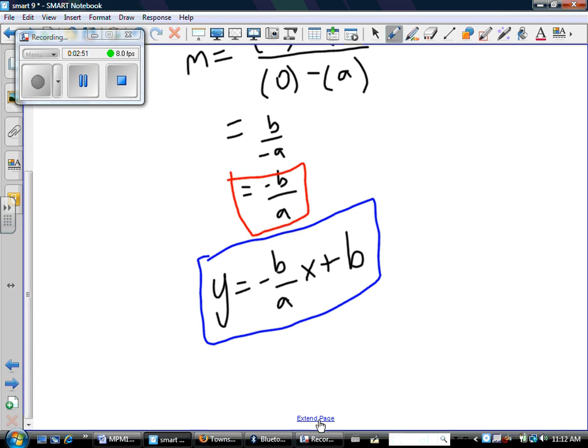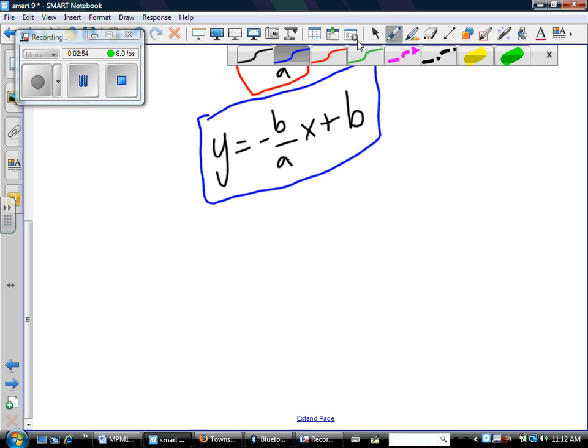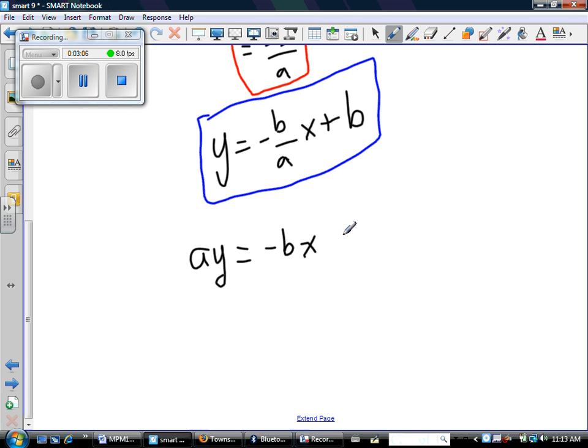Now, that was a little fast. So, let's put it in standard form. Maybe your teacher wants standard form. It's a good thing. So, for me, you know that I like to get rid of my fraction. So, I'm going to multiply everything by a. So, I'm going to have ay equals negative bx plus ab. Multiplied everything by a.